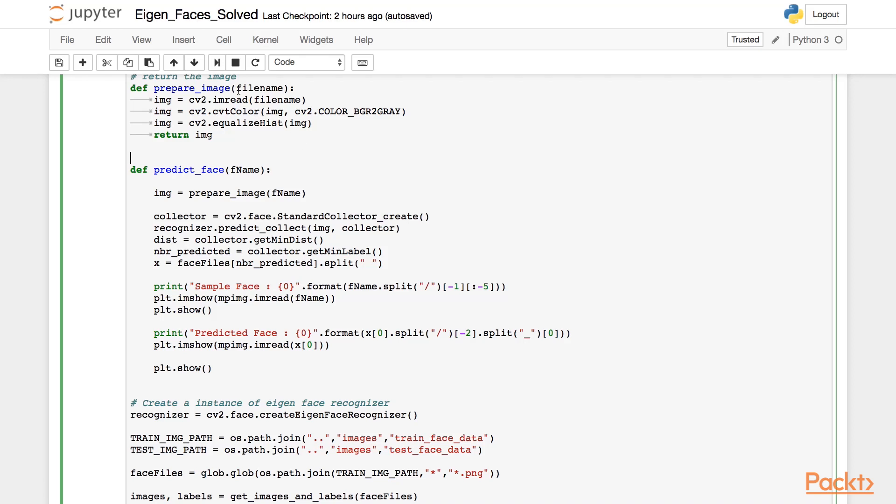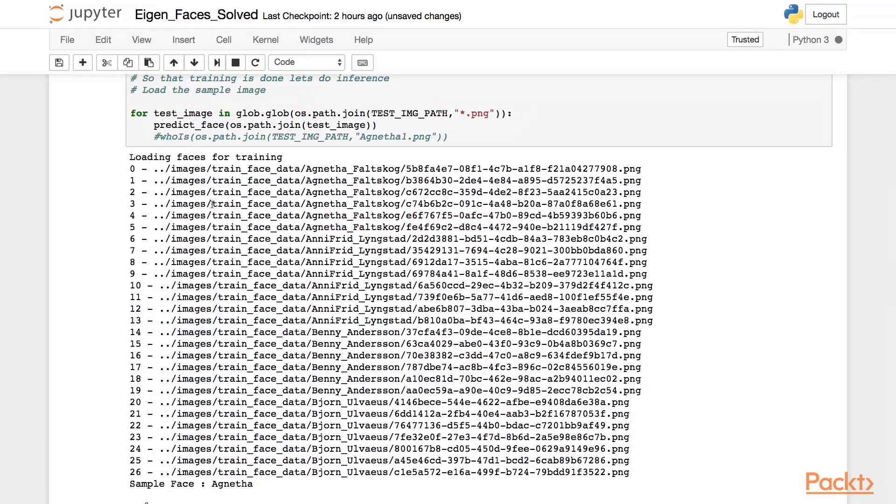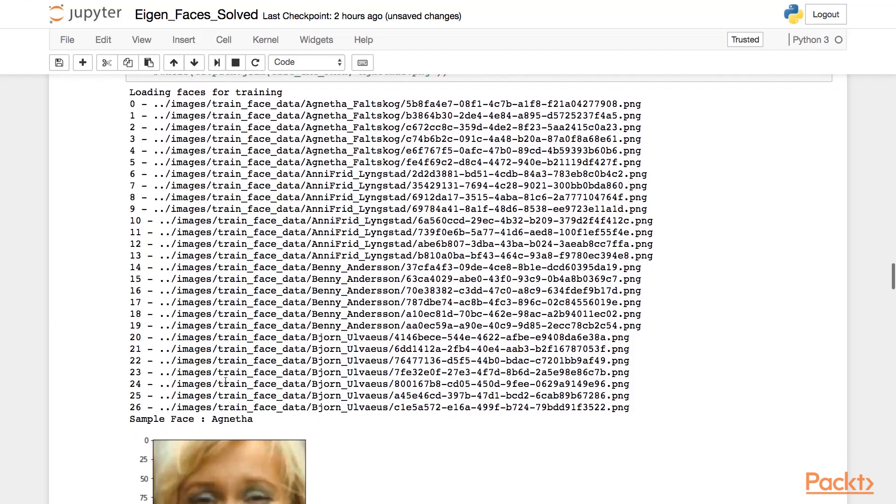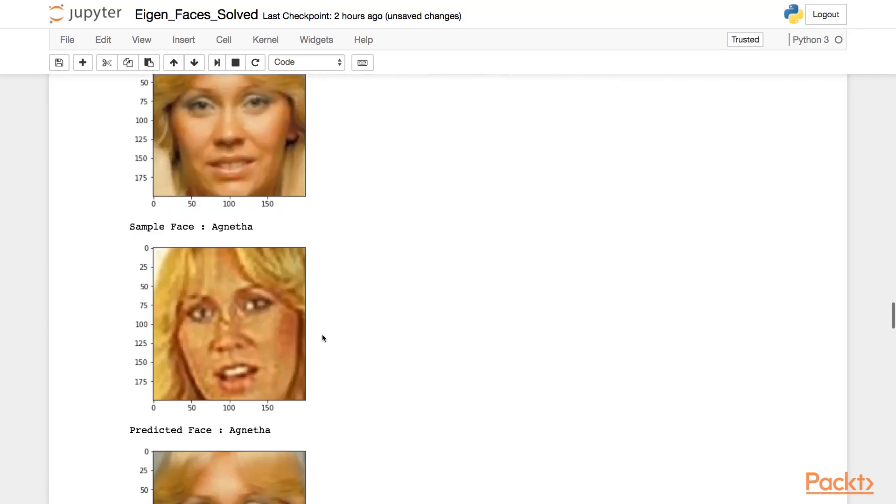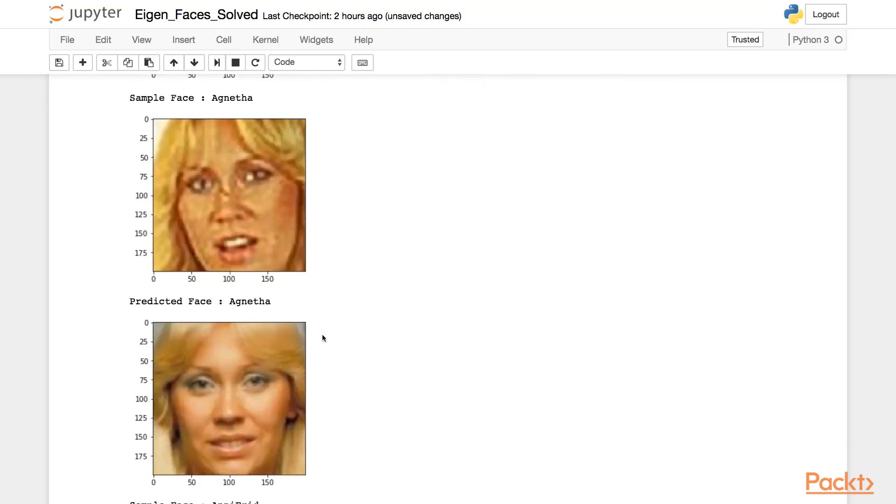Let's see the output of this following program. As you see here, we have trained the images. Here is the test image and the predicted face for the above test image, which is right. The eigenrecognizer in this case was able to recognize the faces correctly. Similarly, for all the other examples, the eigenface recognizer predicts the right face.